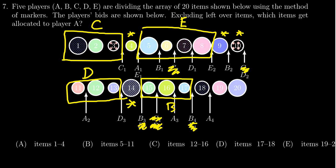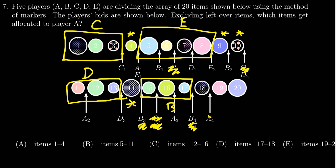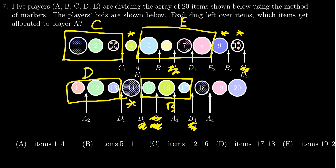Lastly, we find the last marker for A, which is right here. So A is going to go all the way to the end. A is allocated items 19 and 20.